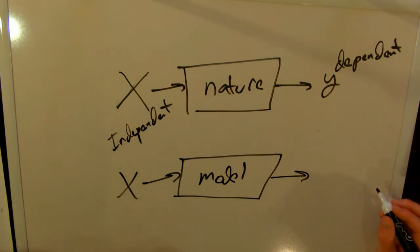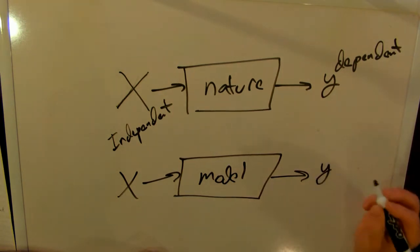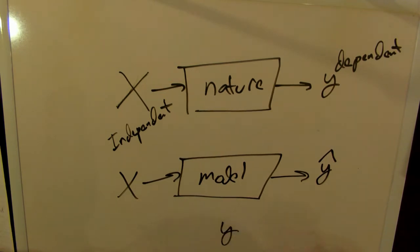What I'm going to do to differentiate the two is when I put X into our model, I'm going to say that the outcome, the dependent variable, the prediction, instead of Y, it's going to be Y-hat. How good is our model is a question that we can answer by comparing Y to Y-hat. How close they are or far apart is going to be how we determine how good our model is.